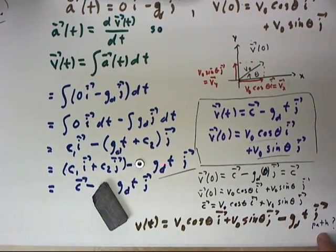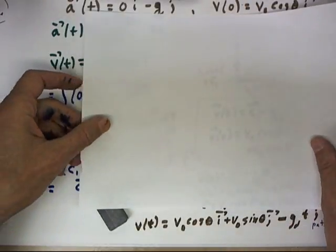We ask ourselves, what does this path look like? How does the object move along the path? And it's not too difficult to analyze that. So let's just take this function and let's agree to combine the two j terms here. So we have v0 sine theta minus g sub d t multiplied by the j vector.